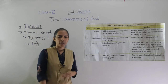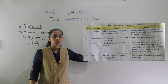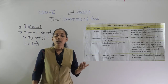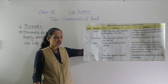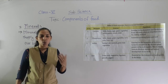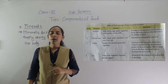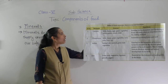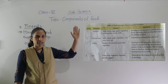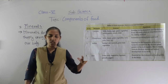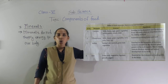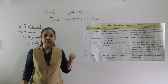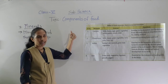The first mineral we are going to discuss is calcium. The sources of calcium are milk, cheese, green leafy vegetables, eggs, whole grain cereals, and meat. From all these foodstuffs we get the mineral calcium.